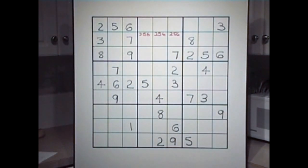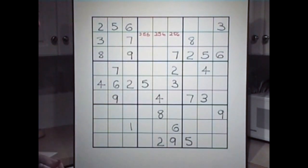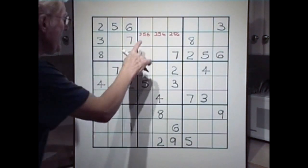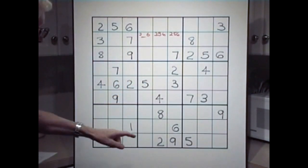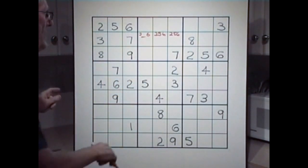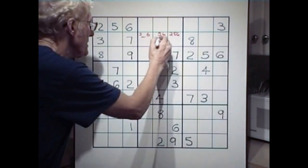Now we look down to see if there's any of these numbers down in here, and here we have a 5, so that gets rid of the 5, so it becomes a 2, 6. Here we have a 2, so that gets rid of the 2 here, and you're left with a 5, 6.